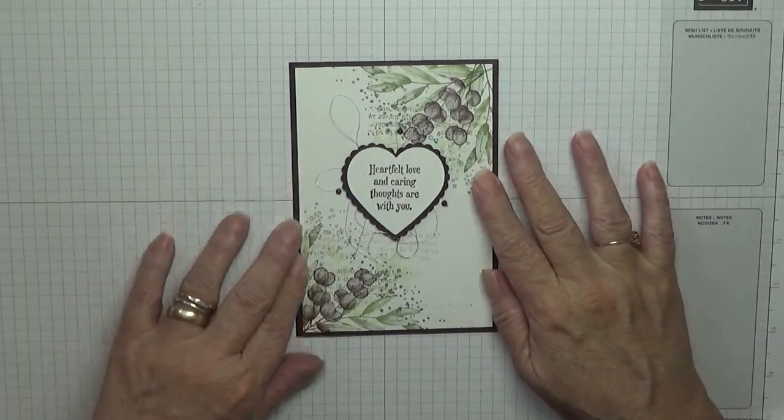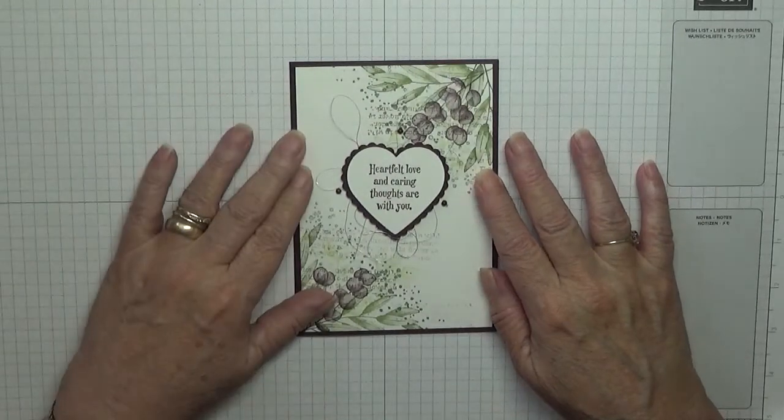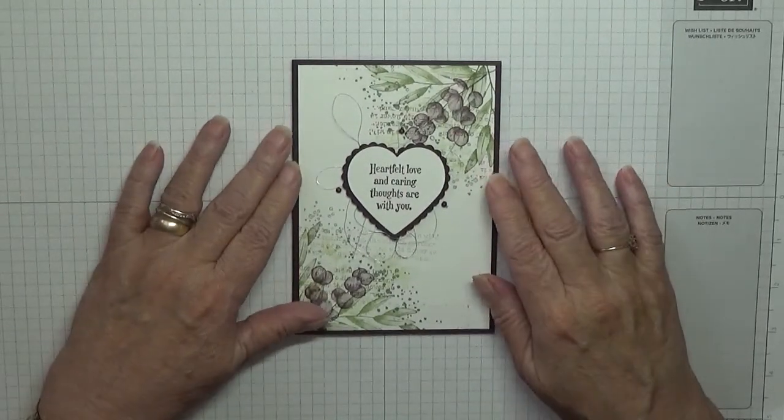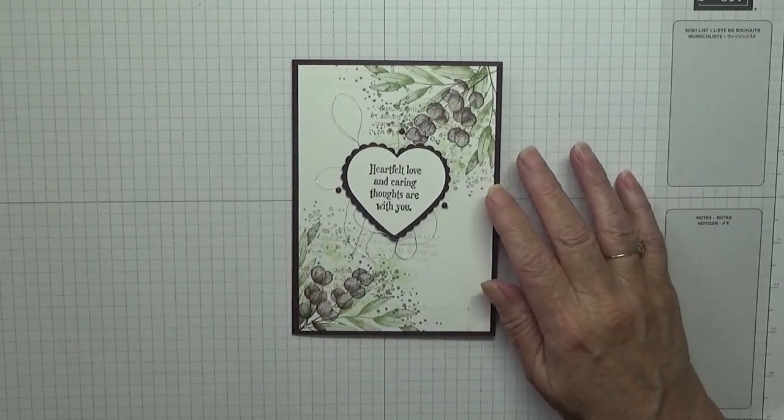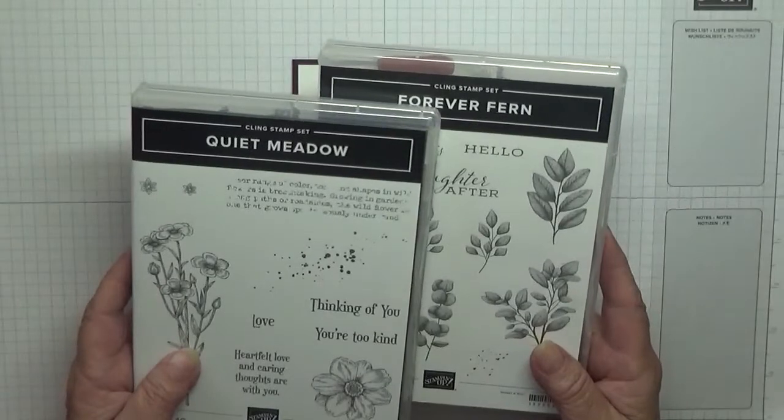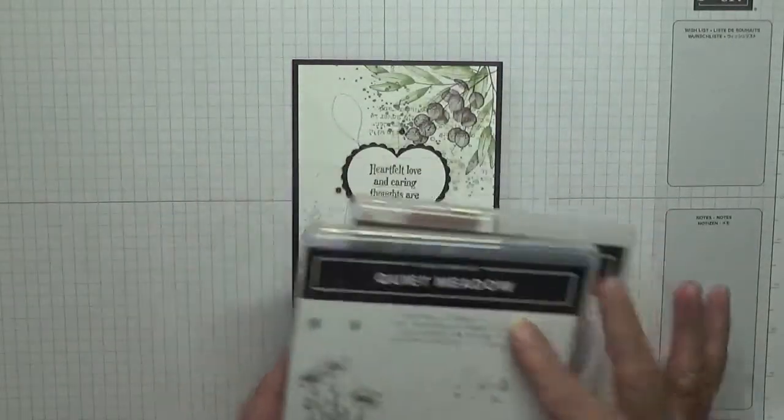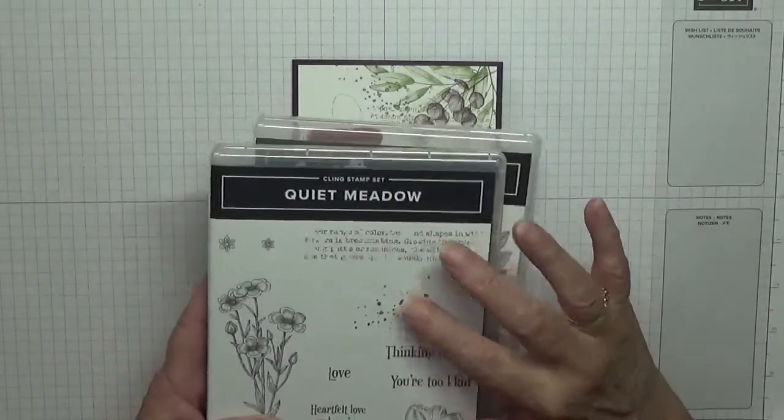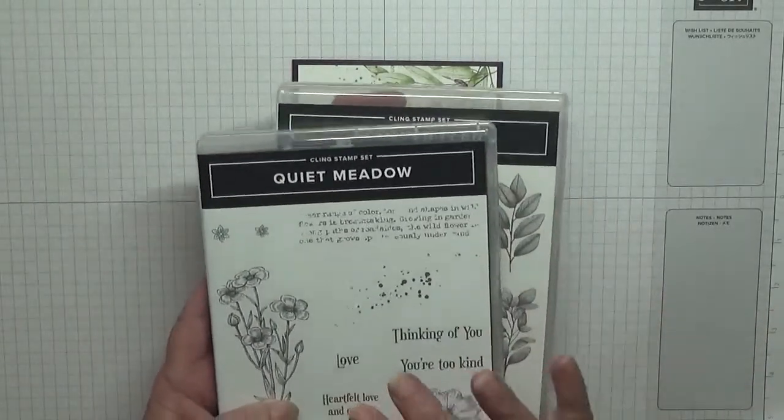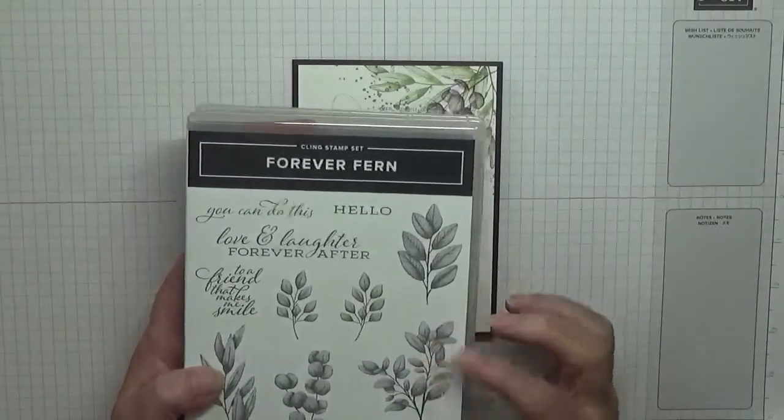Hi, Georgie Burns here. Today I'd like to show you how I made this card. To make this card I've used stamp sets Forever Fern and Quiet Meadow. I'm using the splatters and the writing on this set, oh and the sentiment, and on this one I'm using a few leaves.